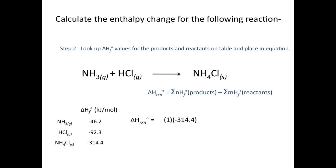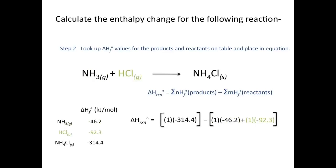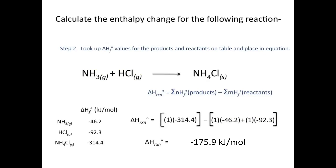On the product side, we have one mole of ammonium chloride with ΔHf° = −314.4 kJ/mol. On the reactant side, we have one mole of ammonia (ΔHf° = −46.2 kJ/mol) and one mole of HCl gas (ΔHf° = −92.3 kJ/mol). Taking products minus reactants gives a ΔH_reaction of −196 kJ/mol.